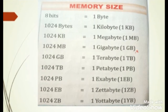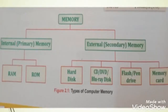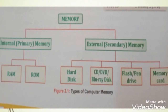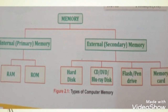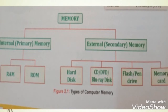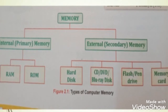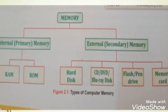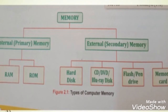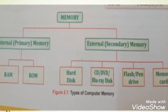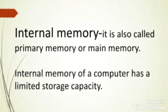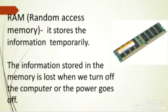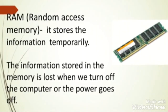I hope that's clear to you, students. Next, we are going to discuss about types of memory. There are two types of memory: internal memory and external memory. Internal memory is also called main memory or primary memory, while external memory is also called secondary memory. Internal memory is further divided into RAM and ROM. External memory is divided into hard disk, CD, DVD, Blu-ray disk, flash drive, and memory card.